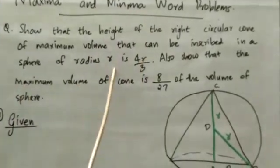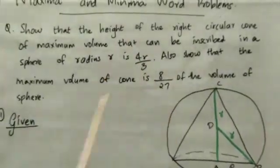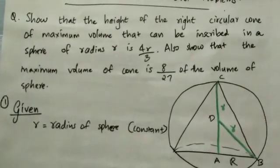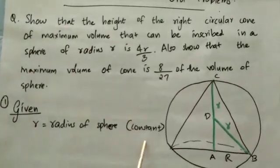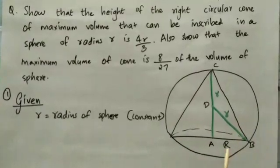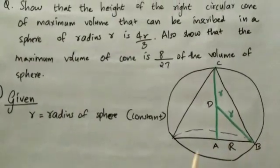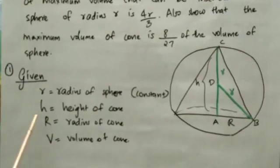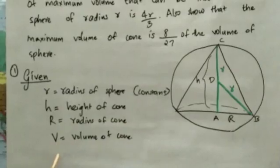Step 1: Draw the figure. The sphere has radius small r — this is constant. The cone inscribed in the sphere has height h, base radius R, and volume V.